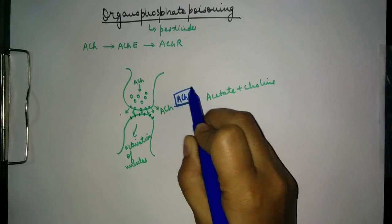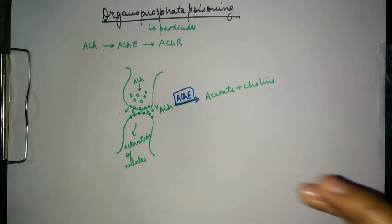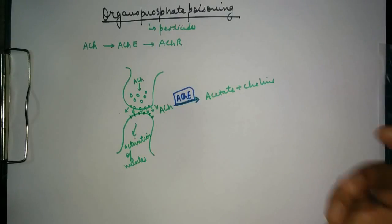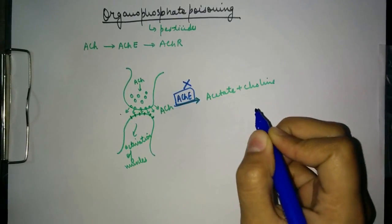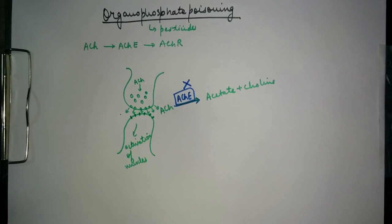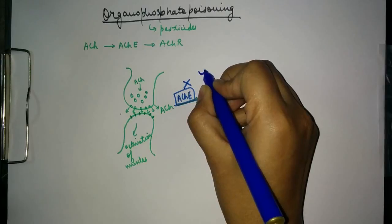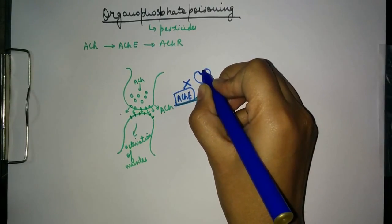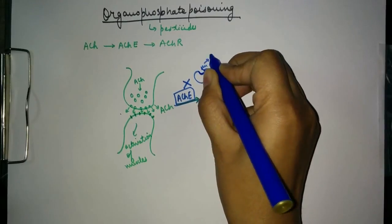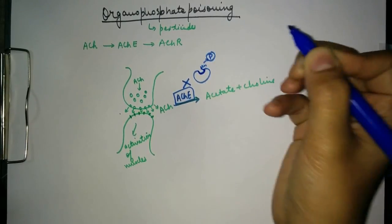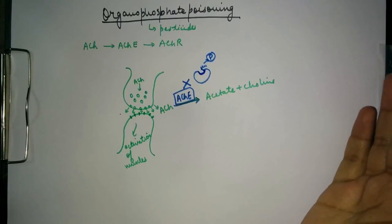Now, the role of organophosphate is that it inhibits the acetylcholinesterase enzyme. It does this by phosphorylating a serine residue present on the active site of the enzyme. The organophosphates phosphorylate this serine residue, and hence the acetylcholinesterase becomes inactivated.